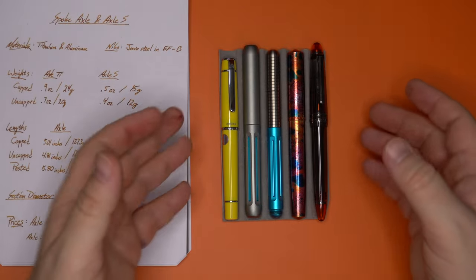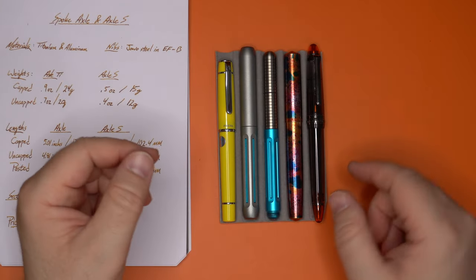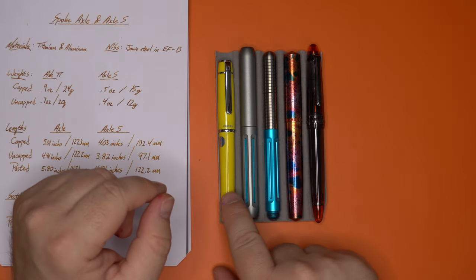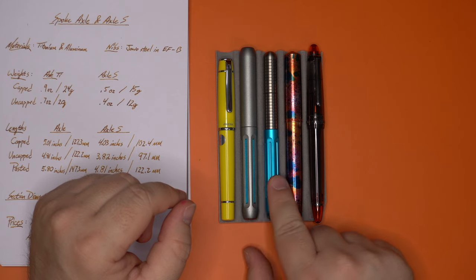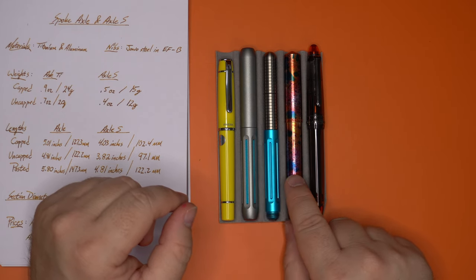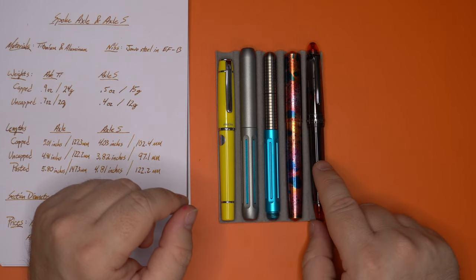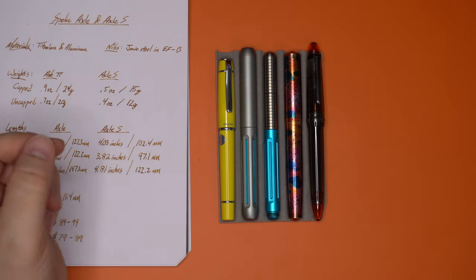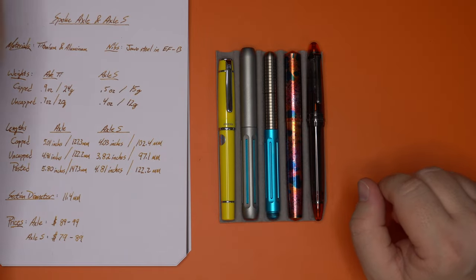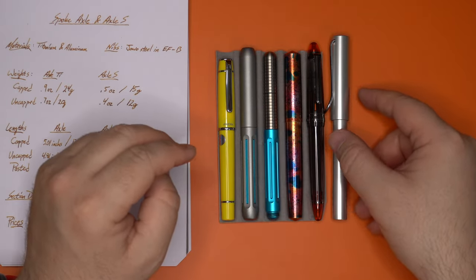Okay, so here is the standard-sized Axle next to some of the pens that are in the same kind of size category. We have here the Pilot Prera. This is the Icon from Spoke, the Spoke Axle, the Schoen Design fountain pen, and also the Sailor 1911 standard-sized fountain pen. And you can see these are all of a size. We can also throw in a Lamy All-Star, because why not?